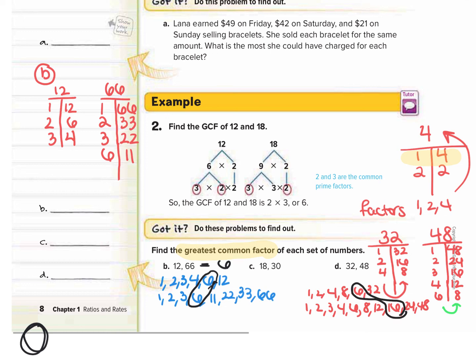So the greatest common factor of 32 and 48 is 16. The last thing we want to do is fill in our answers on the answer line. For letter B we got the answer 6, and for letter D we got the answer 16.